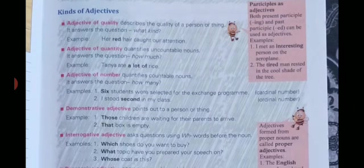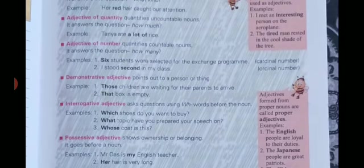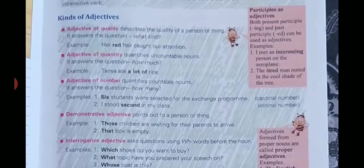Now, kinds of adjectives — how many types of adjectives are there? They are: adjective of quality, adjective of quantity, adjective of number, demonstrative adjective, interrogative adjective, possessive adjective, and emphasizing adjective.